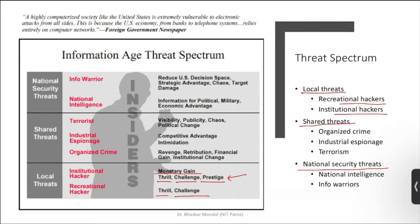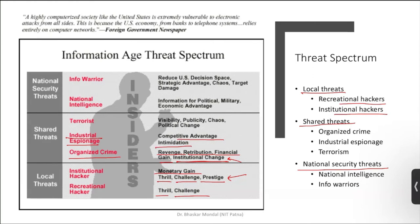Then shared threats, like organized crime — it includes revenge, retribution, financial gain, and institutional change. For example, some ex-employee is suddenly sacked and had company credentials that were not changed or taken back. He can do malicious or illegal activity on the system using those credentials. Then there is industrial espionage — it is competitive, advanced-stage intimidation that one industry does to another.